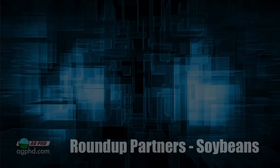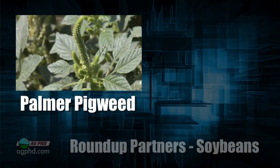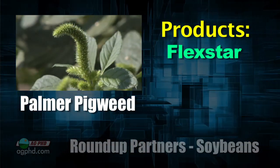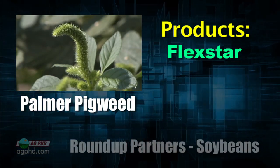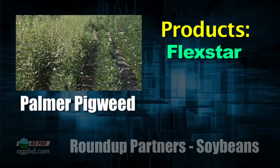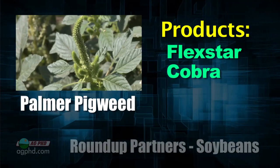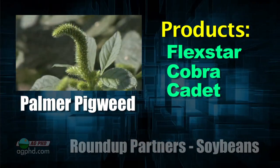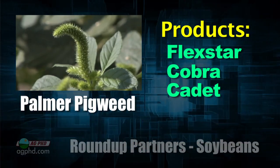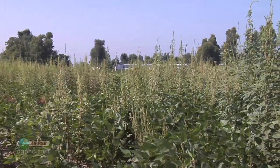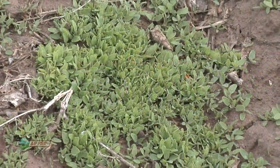Let's rapid fire through some weeds, starting with the big one — Palmer pigweed or waterhemp. If you have a pigweed species resistant to Roundup, I like Flexstar the best. The issue is the use rate and where it's labeled — not labeled in all areas, especially not to the west where there's little rainfall, and lower rates are used farther west and north due to carryover concerns. Number two is Cobra, number three is Cadet. For any of these products to work, you have to kill them when they're small — two to four inch tall weeds — with good coverage and right spray adjuvants, at full rates for your area.